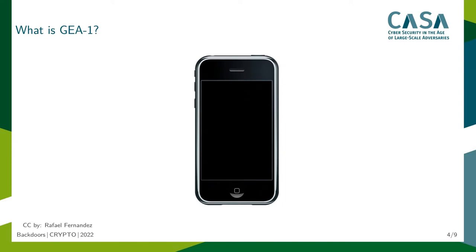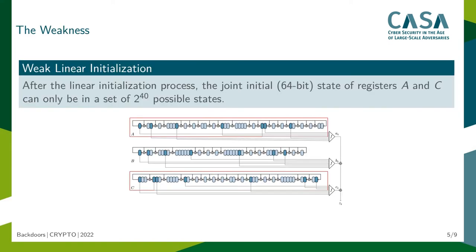Let's start with the first topic, which is the GA1 algorithm — an algorithm which was used in previous versions of GSM to encrypt the data between the mobile phone and the antenna. A recent European paper shows that this cipher has a very particular weakness: two registers jointly only have 2 to the 40 possible states after the linear initialization process, even though they could have 2 to the 64 possible states over all possible keys, so there is a high loss of entropy.